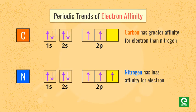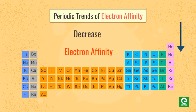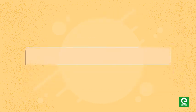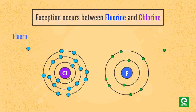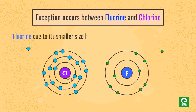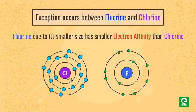In a group, electron affinity decreases from top to bottom. Exception to this rule occurs between fluorine and chlorine: fluorine, due to its smaller size, has high electron density resulting in a slightly smaller electron affinity than chlorine.